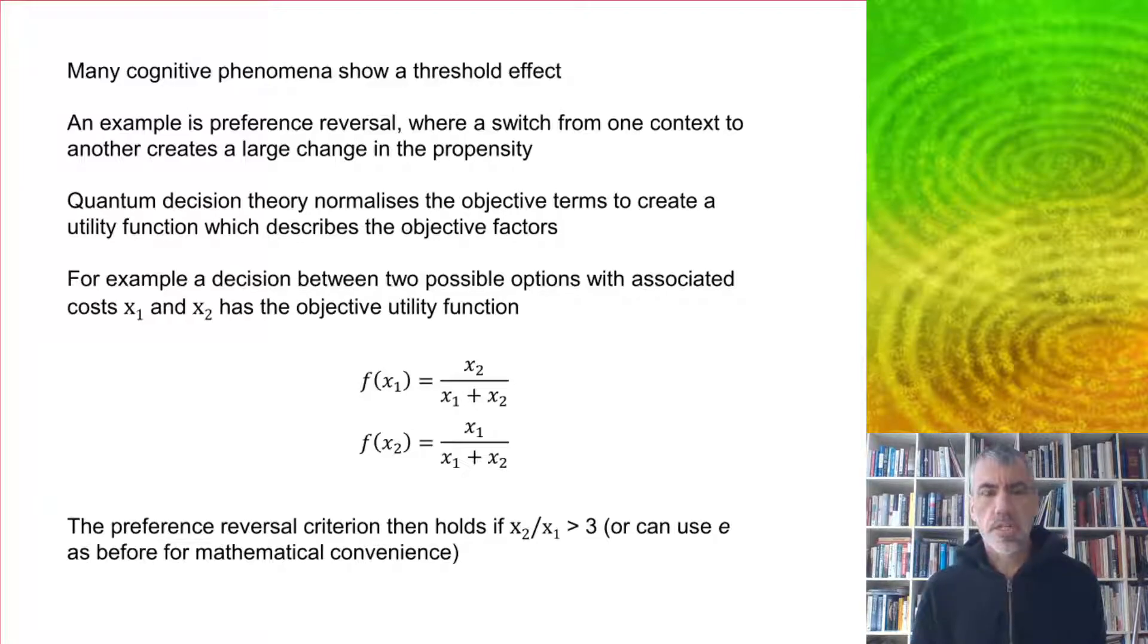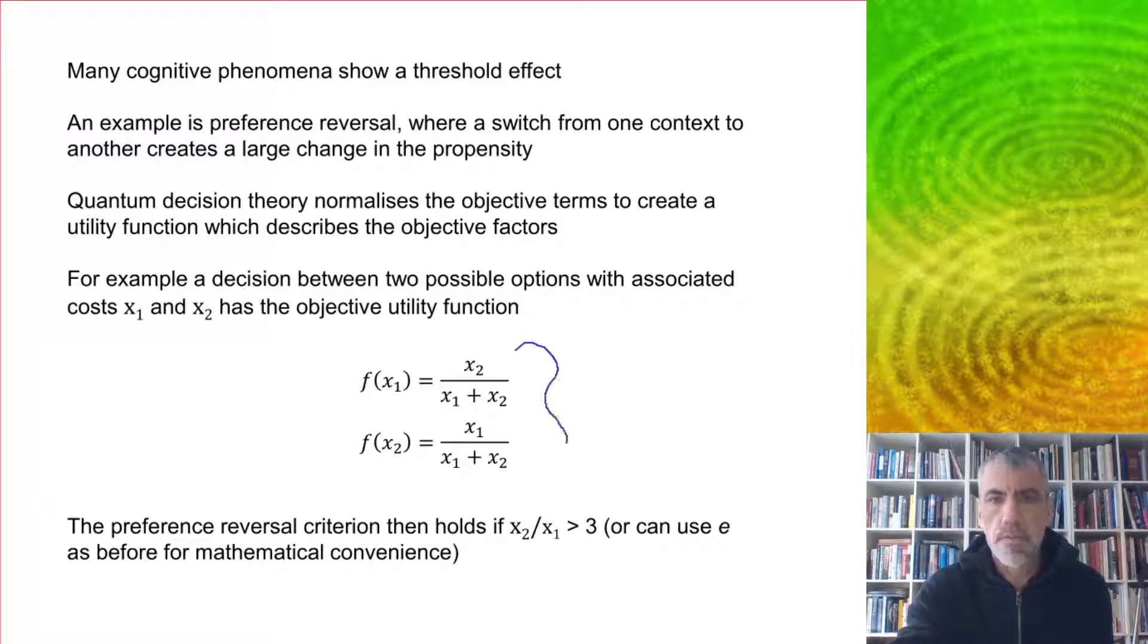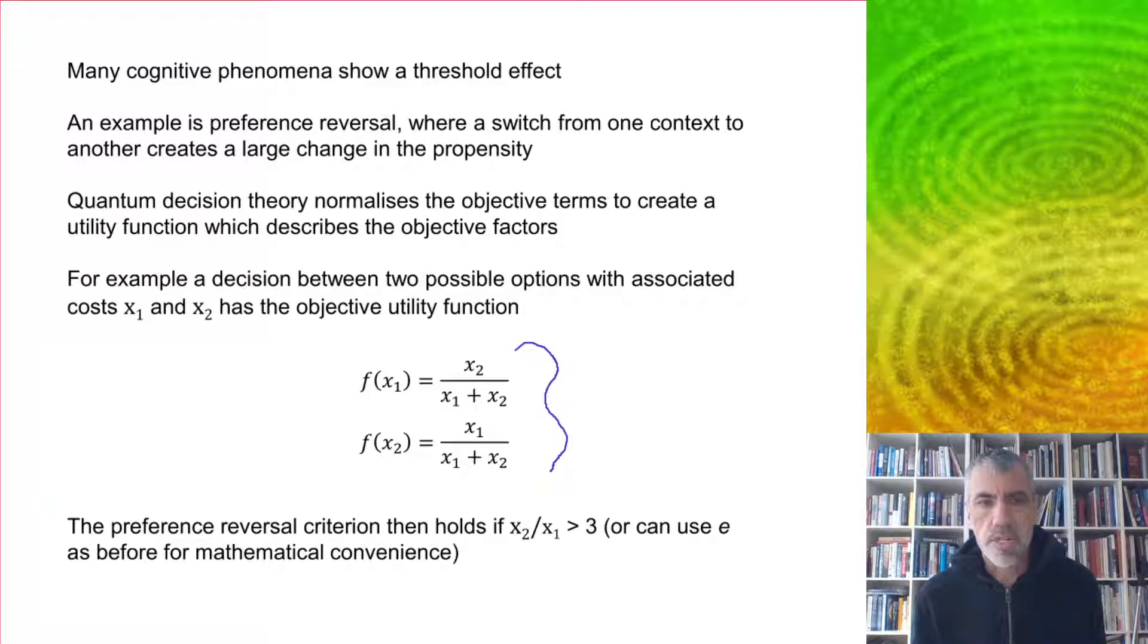Quantum decision theory analyzes this by normalizing the objective terms to create a utility function describing the objective factors. For a decision between two possible options with associated costs X1 and X2, the preference reversal criterion holds if the ratio X2 over X1 is greater than 3, or we can use E for mathematical convenience.